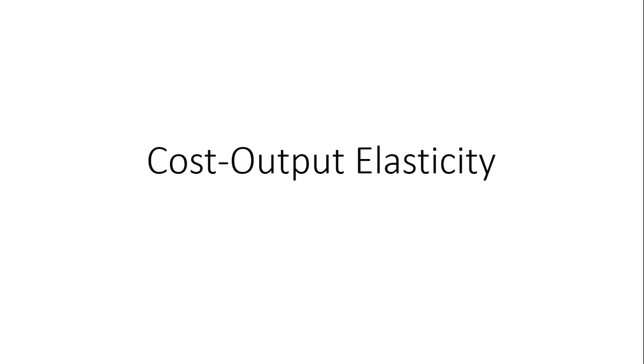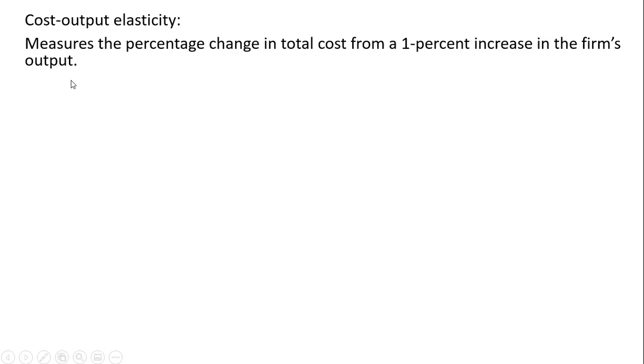In this video, we're going to look at cost output elasticity. What is it, how to calculate it, and do some numerical examples. The definition is cost output elasticity measures the percentage change in total cost from a 1% increase in the firm's output, sometimes called output elasticity of total cost.